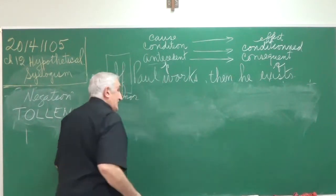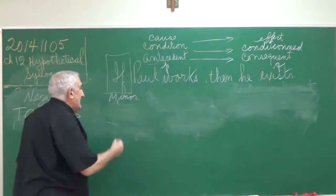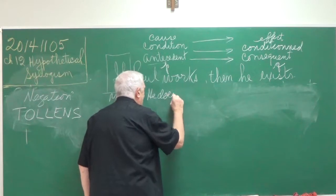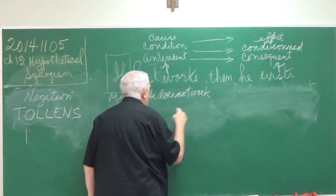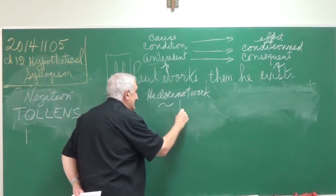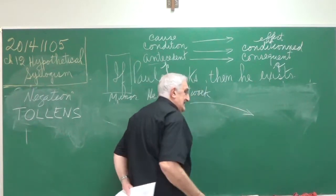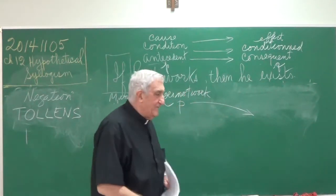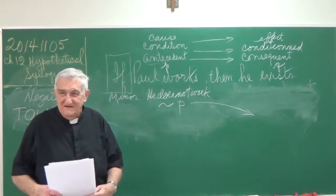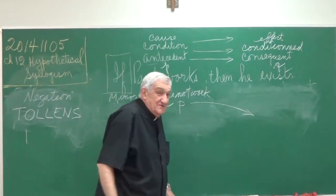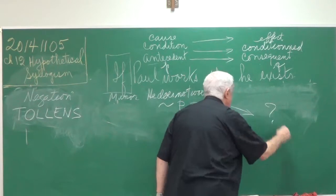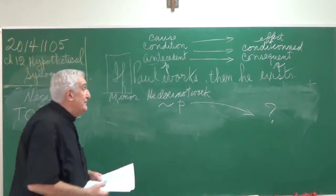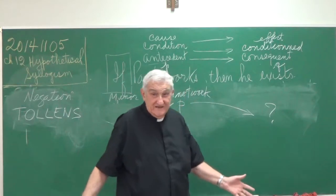The third possibility — and we have four possibilities, not two by two, but four. If Paul works, then he exists. But he does not work — I deny P. What is the consequence of that? Nothing. Can you affirm something by the fact that Paul does not work? He can exist, he can also not exist. So we don't know — and that is the invalid form, because that leads to nothing.